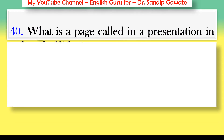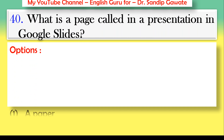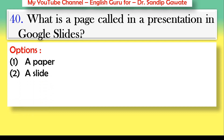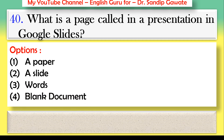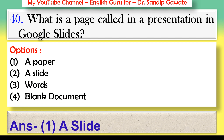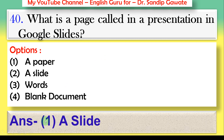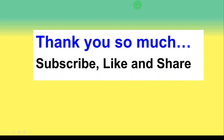Question 40 — the last question: What is a page called in a presentation in Google Slides? Options: a paper, a slide, words, or a blank document. The correct answer is option number two — it is called a slide. In this way, we discussed 40 questions. Thank you so much. This is a very important video — please like, share, and subscribe to the channel and press the bell icon to stay tuned.